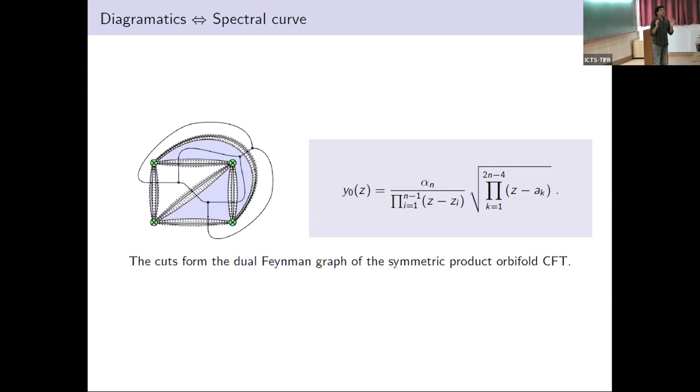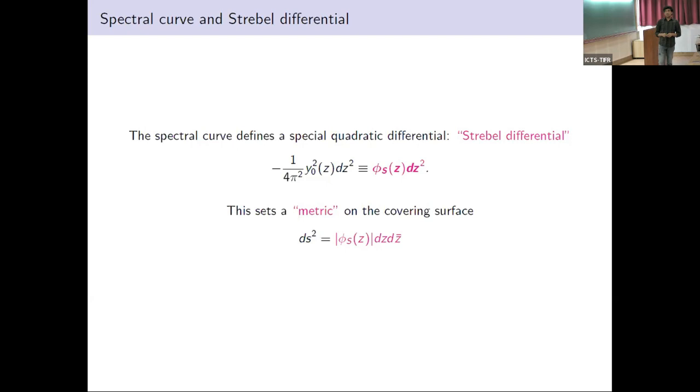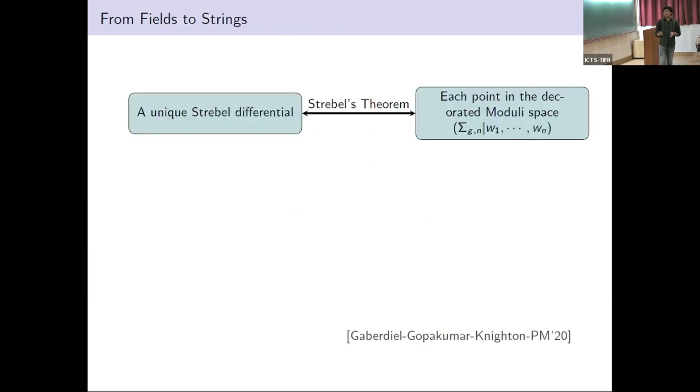Let me summarize. We are trying to compute the correlator of the 2D conformal field theory. For that, we need to know the covering surface. To know the covering surface, we map that problem to a matrix model and to eigenvalue distribution. All of that information is encoded in the spectral curve. If we know the spectral curve, in principle we know the correlator. Now magically, it turns out that the spectral curve has some branch cuts, and these branch cuts form a dual Feynman diagram. If the original Feynman diagram of the 2D CFT is given by these colored figures, the dual Feynman diagram is created by these collapsed eigenvalues. Another magic comes from the observation that the spectral curve is nothing but a very special kind of quadratic differential called Strebel differential. This sets a metric on the covering surface.